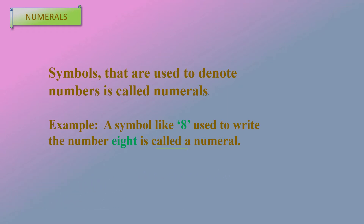Here, symbols are used to denote a number. If you use a symbol to denote a number, you can use it as a numeral. See here is an example: a symbol like 8. Here, 8 is a symbol. We already know numbers — 8 is a number, but actually it is a symbol. This symbol is used to write the number 8, so it is called a numeral.